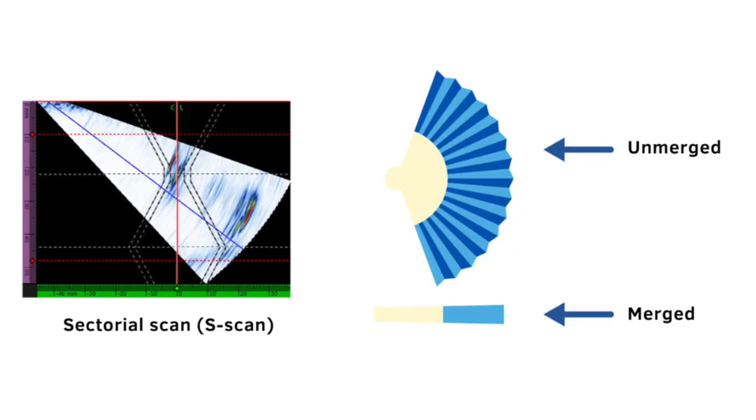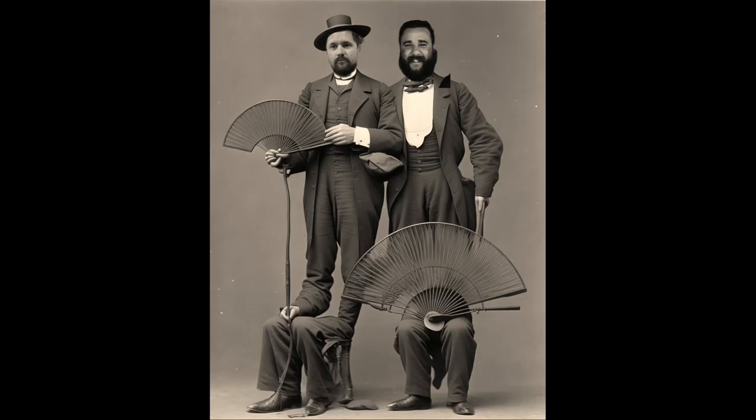Evident has a neat analogy on their website. They describe it as like one of those folded fans you may have had as a kid. A typical B-scan would be the view down one of those pleats, but if you fold the fan together, that makes it a merged B-scan.